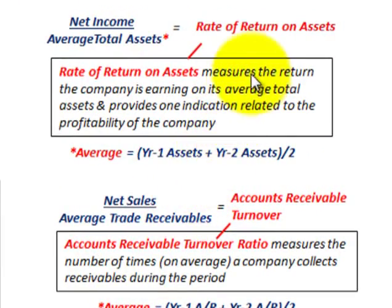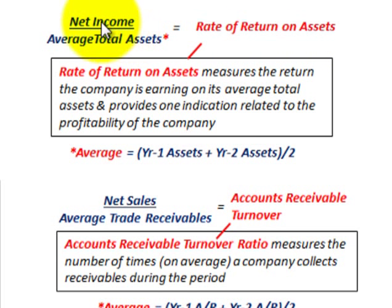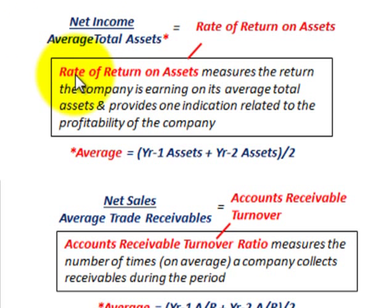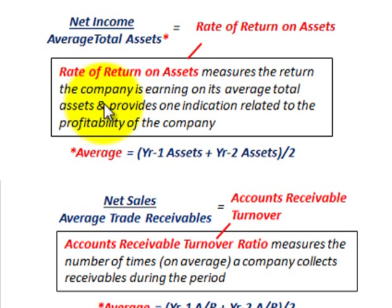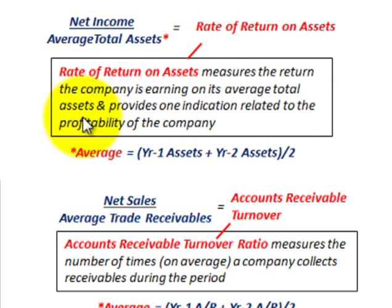Now let's look at the rate of return on assets. That's simply net income divided by average total assets. The rate of return on assets measures the return the company is earning on its average total assets and provides one indication related to the profitability of the company.